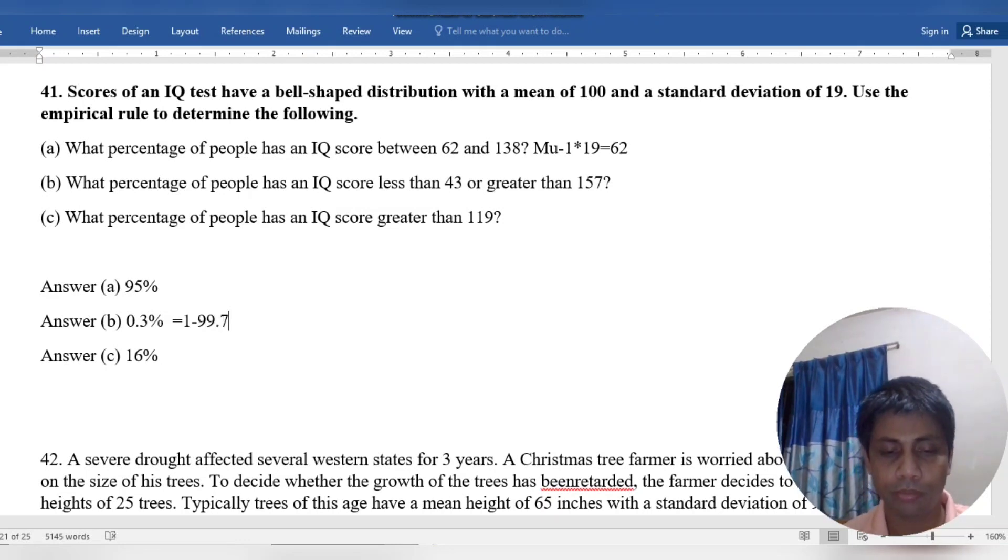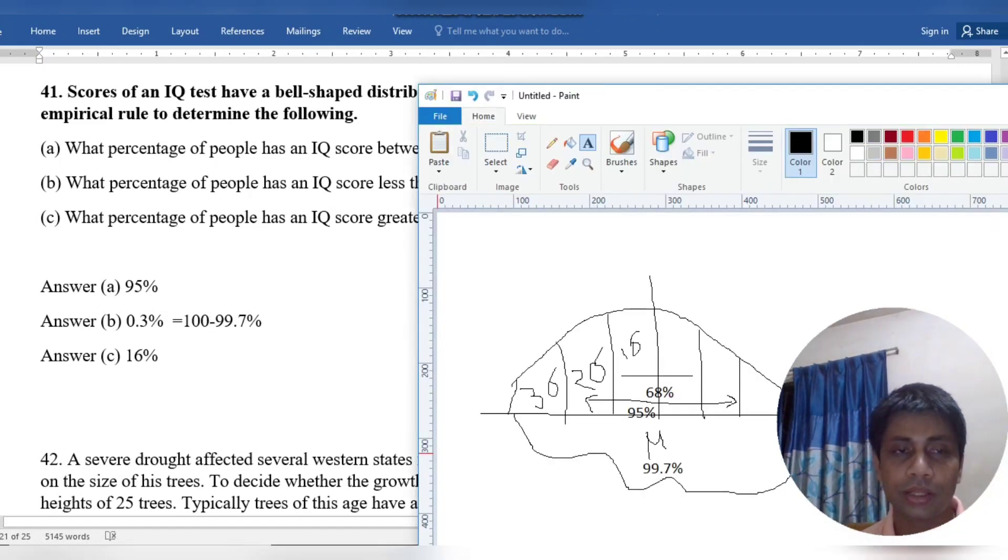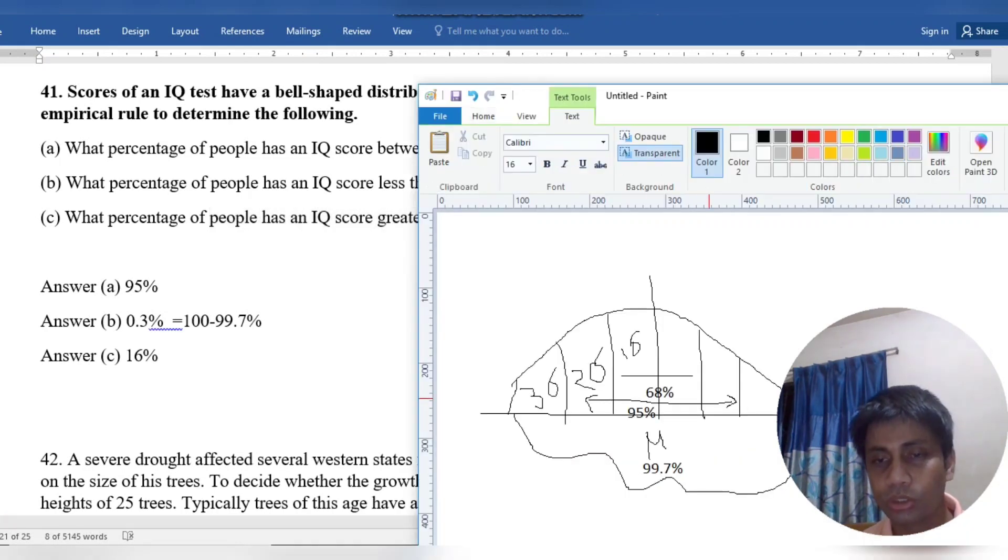Here, the percentage of people with IQ score greater than 119. What is 119?